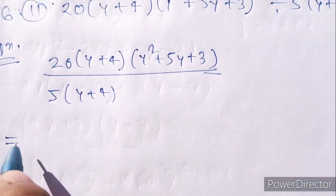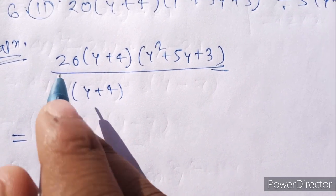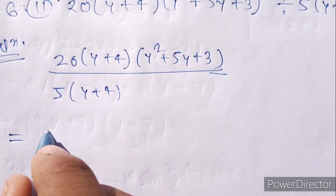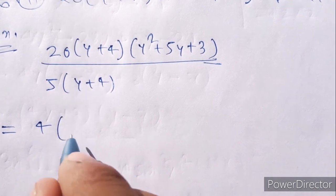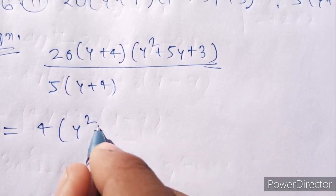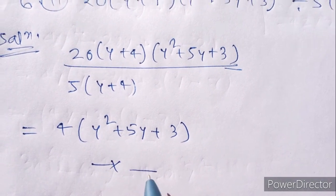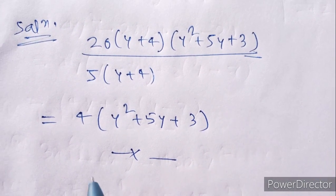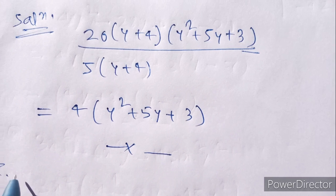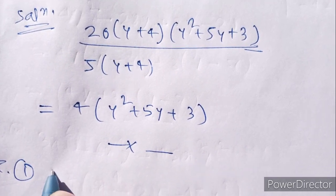Solution: 20y plus 4y² plus 5y plus 3 divided by 5y plus 4. So 4y² plus 5y plus 3.